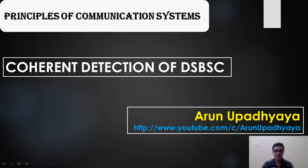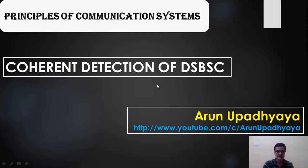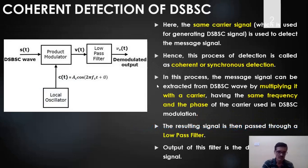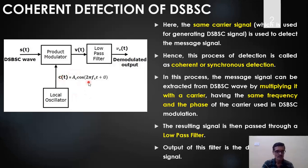In this video I will explain the demodulation of a double sideband suppressed carrier signal. The method I am going to describe here is coherent detection of DSBSC. This method is called coherent detection of the double sideband suppressed carrier because in this case, for the demodulation process, I am using the same carrier that was used for modulation in the transmitter.